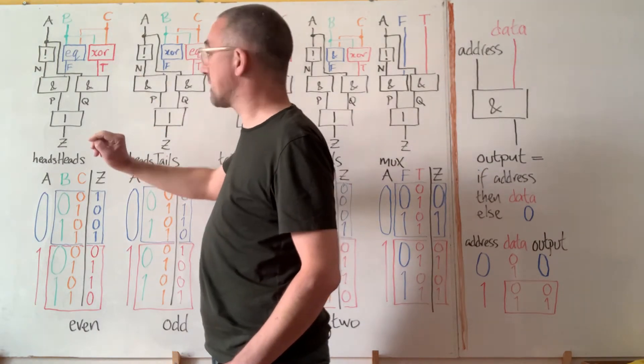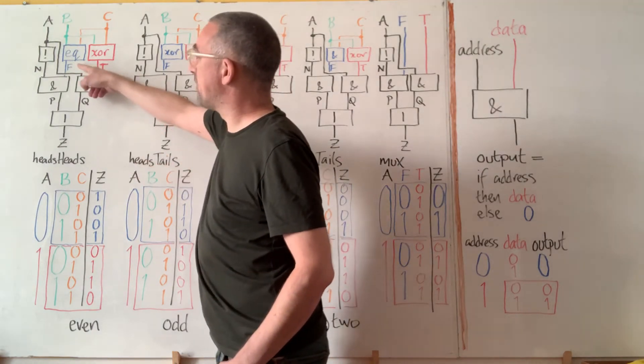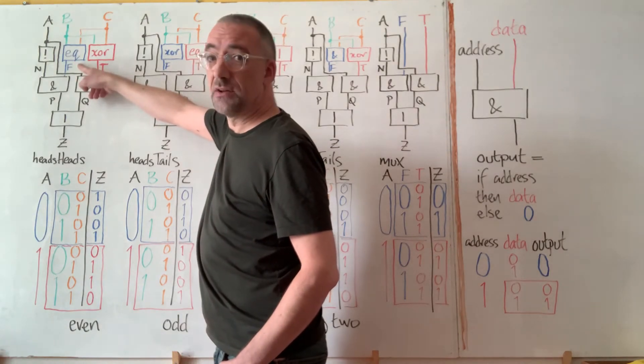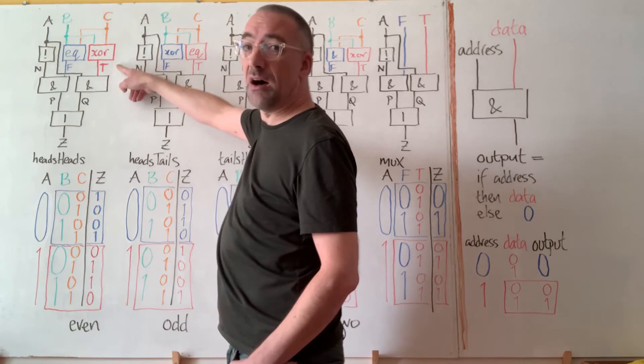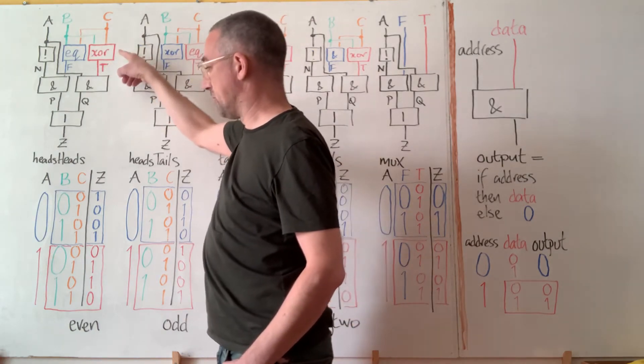And in the heads-head circuit you can see that plugged into F is an equality test for the other two inputs. And for T we have an XOR computation on the other two inputs.